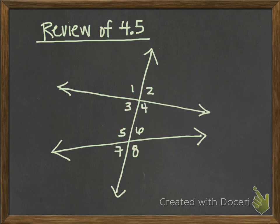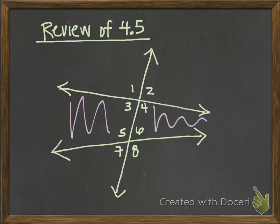Something new I'd like you to add to your 4.5 notes: same side interior angles and same side exterior angles. It's a lot like alternate interior and alternate exterior, except same side interior angles are on the same side of the transversal, still within the interior. Angles on the same side interior would be like 3 and 5, or 4 and 6.